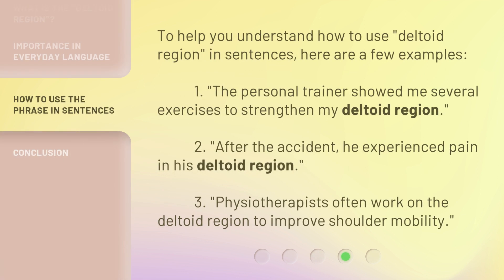To help you understand how to use 'deltoid region' in sentences, here are a few examples. 1. The personal trainer showed me several exercises to strengthen my deltoid region. 2. After the accident, he experienced pain in his deltoid region. 3. Physiotherapists often work on the deltoid region to improve shoulder mobility.